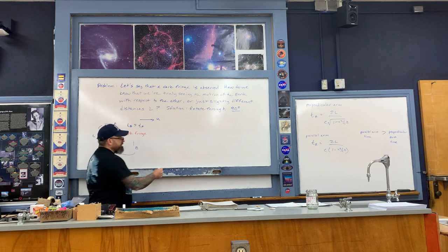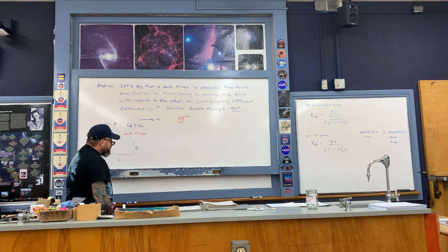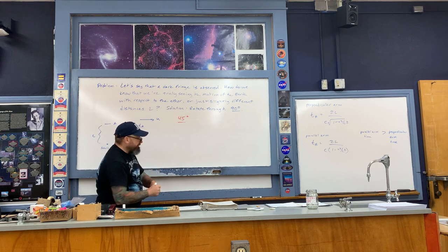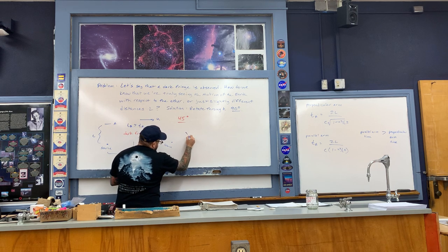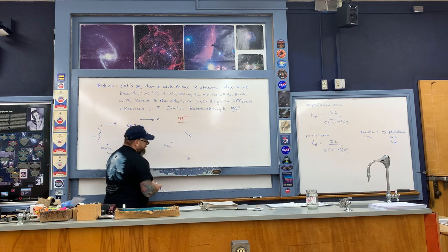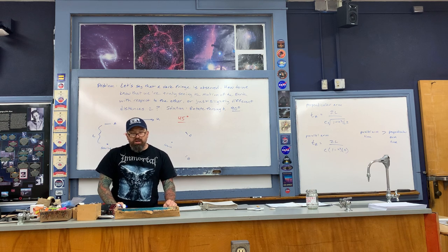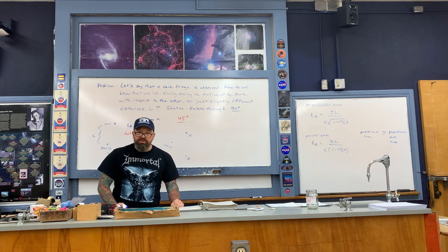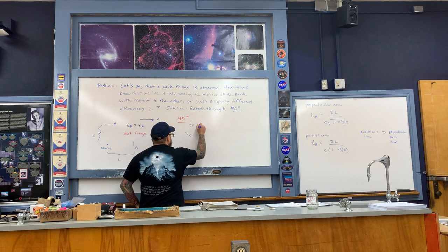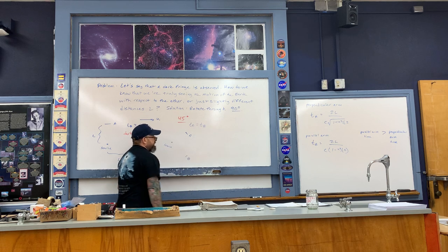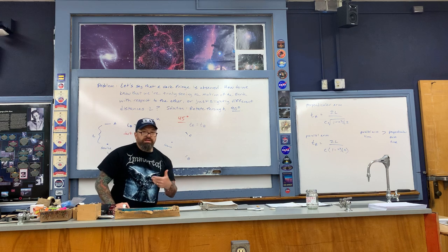Now let's say that we rotate the apparatus through a 45-degree angle. If we rotate through 45 degrees, the situation becomes symmetrical. The source is here, mirror A is here, mirror B is here. Without going through all the Galilean relativity, what we would find simply is that the two times would be equal to each other — obviously from the symmetry of the situation. So in this case T sub A would equal T sub B, and therefore instead of seeing a dark fringe in the center of the interference pattern, we would see a bright fringe.